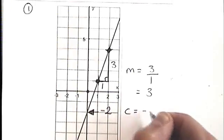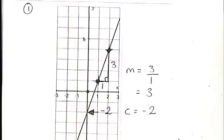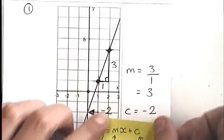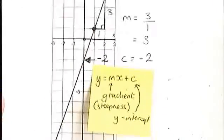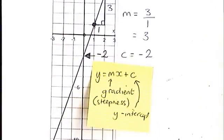We have a y-intercept of minus two. And we can use those pieces of information. Remember what we said? We said that once we've got those two pieces of information, we can fill them in into this equation.